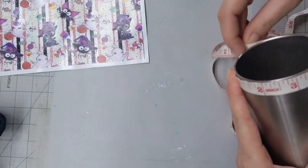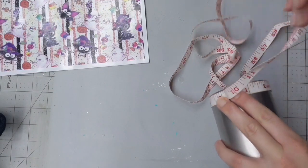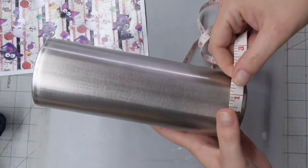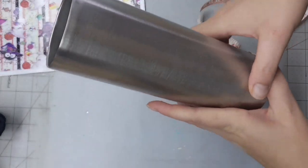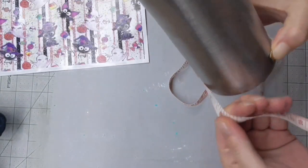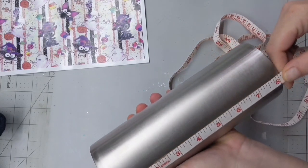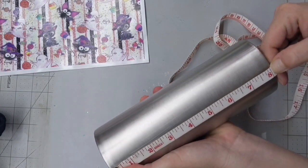So for this cup I'm wrapping the cup in vinyl and because I'm printing it at home I really want to make sure that my measurements are right. I'm just taking this measuring tape and wrapping it around the cup. I know that I need it to be 9.25 inches wide and then 8 inches tall.